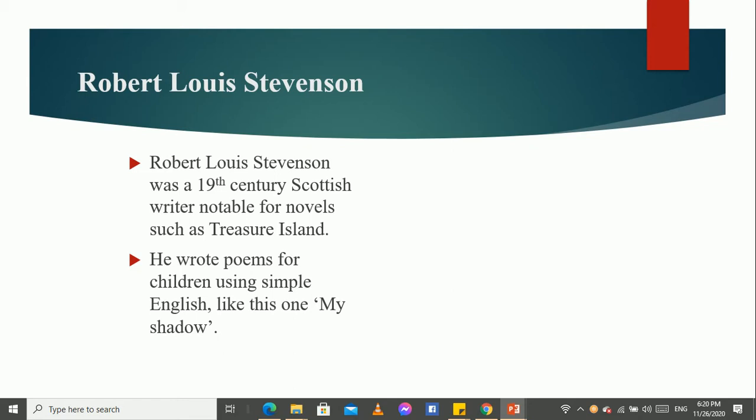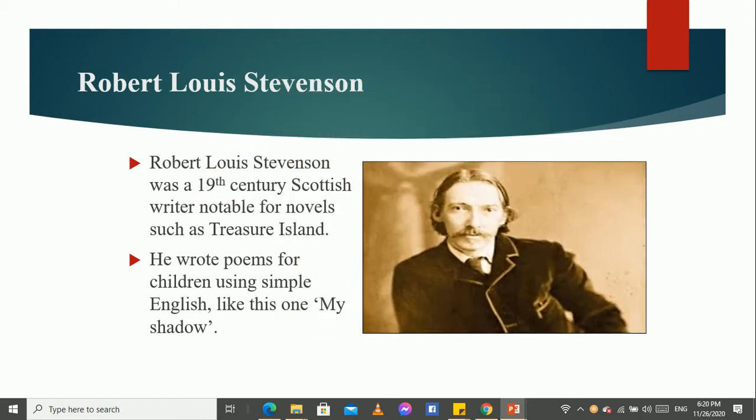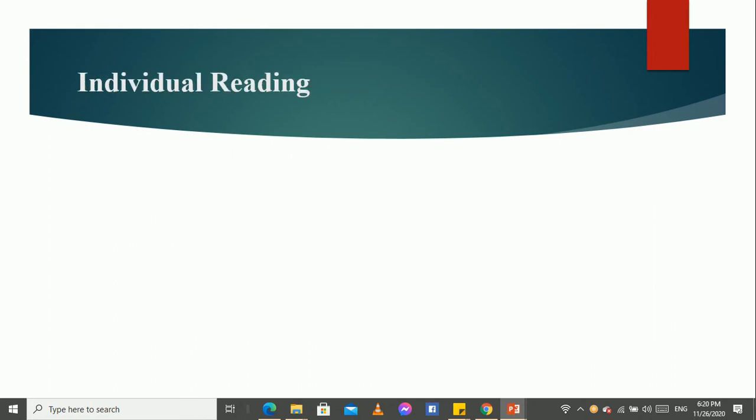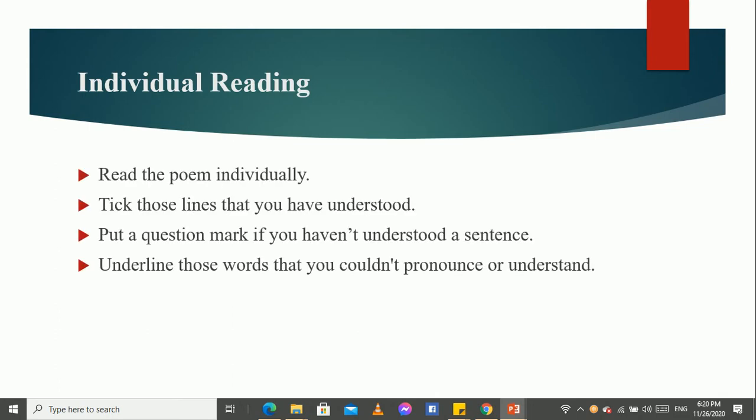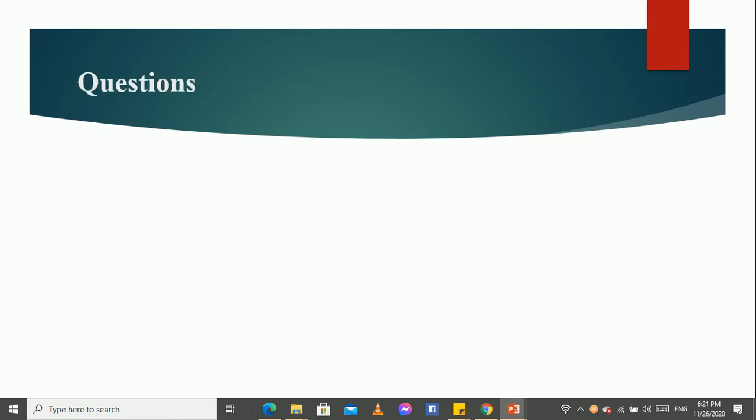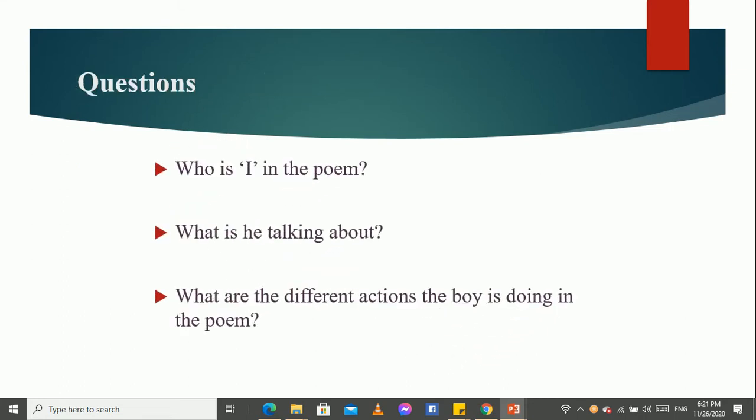So, before, how to start the poem? We will start with the individual reading. Read the poem individually. Tick those lines that you have understood. Put a question mark if you haven't understood a sentence. Underline those words that you couldn't pronounce or understand. So, after learning individually, we will get some questions.